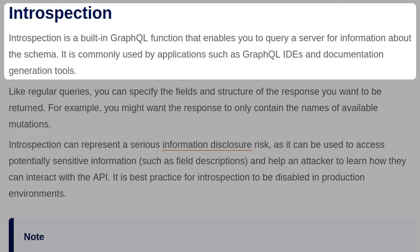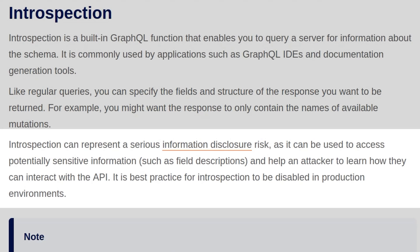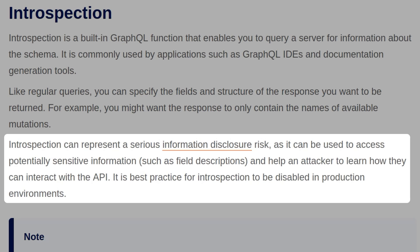Introspection is a built-in GraphQL function that enables you to query a server for information about the schema. It's commonly used by applications such as GraphQL IDEs and documentation generation tools. Like regular queries, you can specify the fields and structure of the response you want returned — for example, you might want only the names of available mutations. Introspection can represent a serious information disclosure risk, as it can be used to access potentially sensitive information such as field descriptions, helping an attacker learn how to interact with the API. It's best practice for introspection to be disabled in production environments.